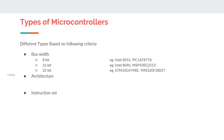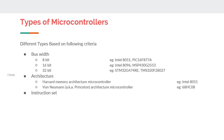Mainly, according to architecture, we have Harvard and von Neumann, or we can say Princeton architecture. Von Neumann is an ancient architecture and it is followed in microprocessors, but Harvard is quite popular in microcontrollers.